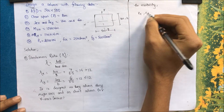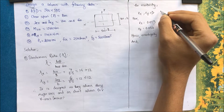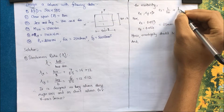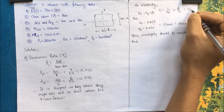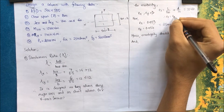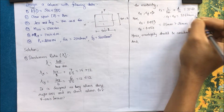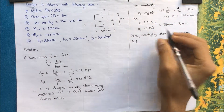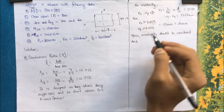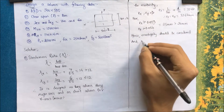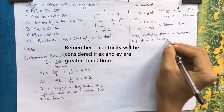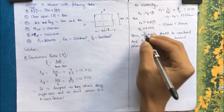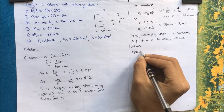Next we check for eccentricity. ex = ey = l/500 + d/30 = 32.67 mm (same for both axes since d = b = 500). The value 0.05d = 0.05b = 25 mm. Since both ex and ey are greater than 0.05b and 0.05d respectively, eccentricity must be considered, and it is a biaxially loaded column.